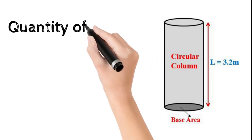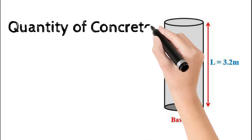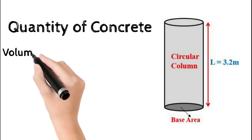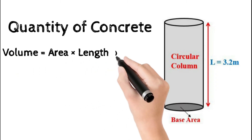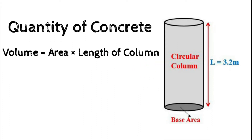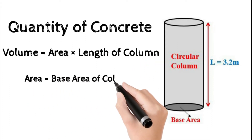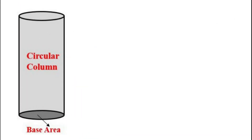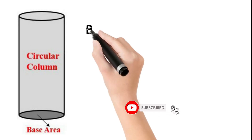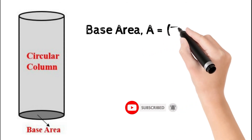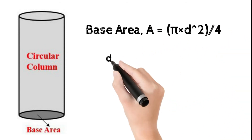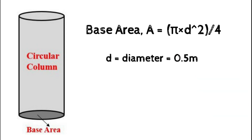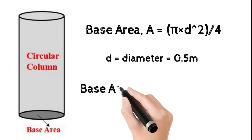First, we will see how to calculate the quantity of concrete in a circular column. Quantity of concrete in terms of volume equals area multiplied by the length of the column, where area is the base area of the circular column and length is the height. Since it is a circular column, the area of the circle is πD²/4, so the base area is also πD²/4, where D is the diameter equal to 0.5 meter.